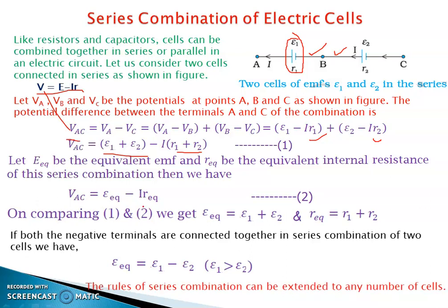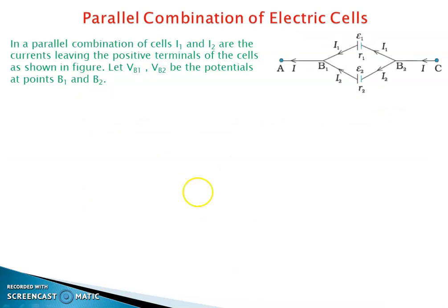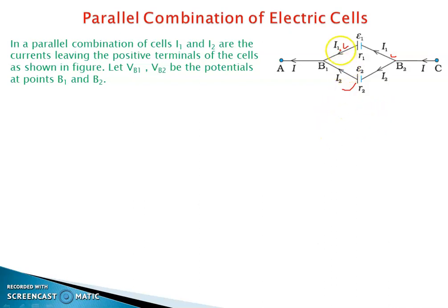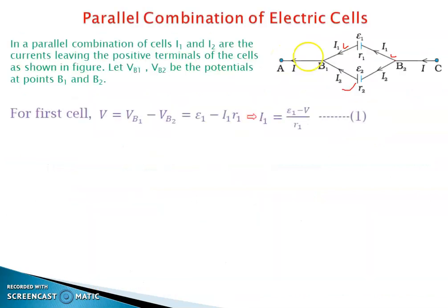Now we are going to the parallel combination. In parallel combination, the positive terminals of the cells are connected at a single point and the negative terminals are connected at a single point. In parallel combination, potential difference is common whereas currents are different. In the series combination, current was the same, but in parallel combination the potential difference is the same and currents are different.